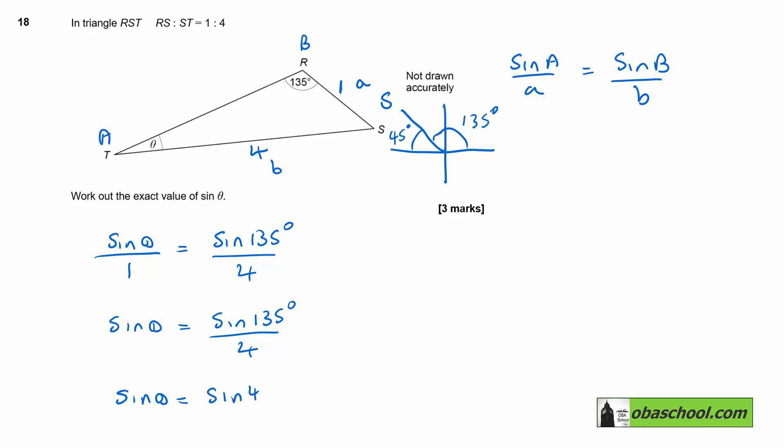So sine θ is sine 45° divided by 4. The sine of 45° is 1 over √2, or √2 over 2. Then divided by 4, which is √2 divided by 8.